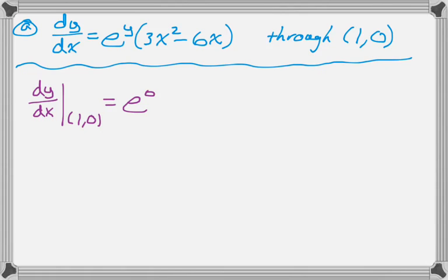So I get e to the 0, substituting in for y, and then the quantity 3 minus 6, because x is 1, so it just becomes 3 minus 6. That gives me negative 3. And I also know it goes through the point (1, 0), so now I can write the tangent line.